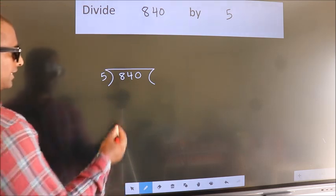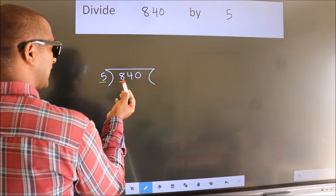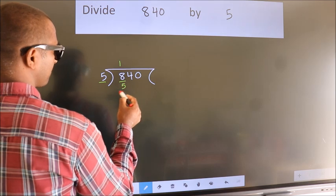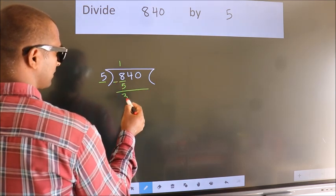Next, here we have 8, here 5. A number close to 8 in 5 table is 5 once 5. Now we should subtract. We get 3.